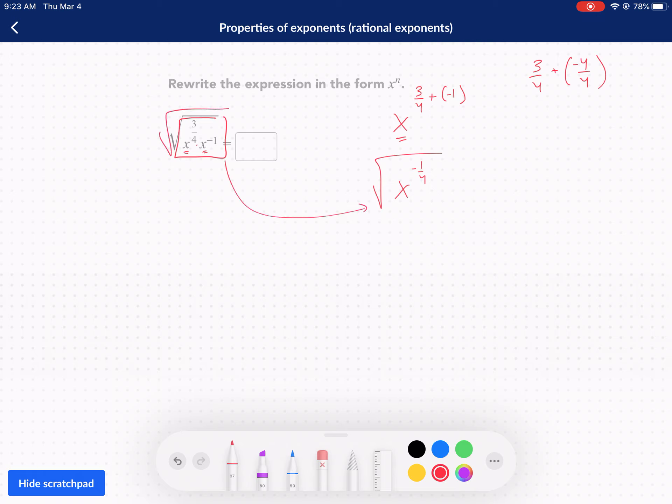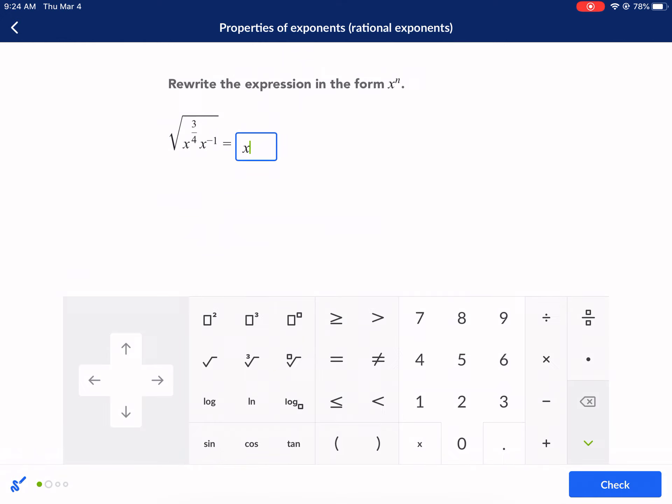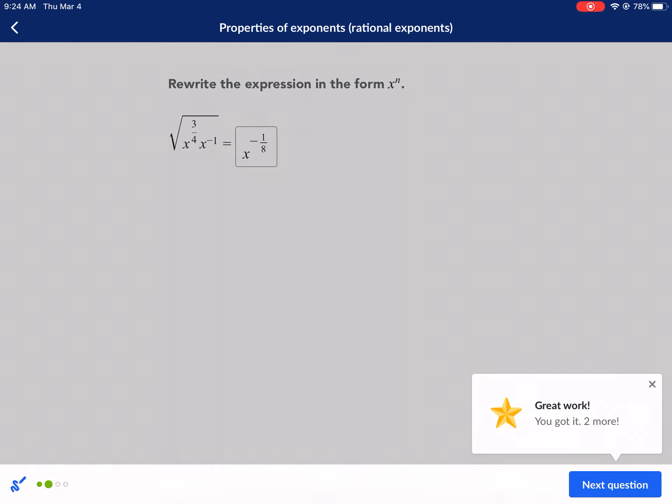So I simplified this, became x to the negative one-fourth. I still have the square root to deal with. Keep in mind, a square root is the same thing as raising it to the one-half power. So we can rewrite this root as a power by doing one over two. That's essentially saying that the root is two. So second root, square root. Now we just have power raised to power. We're going to multiply exponents. So negative one over four times one over two, gives us x to the negative one over eight. Check it. Moving on. We got it.